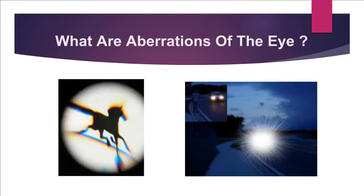What are aberrations of the eye? They are described as small optical irregularities — aberrations are imperfections of the eye. This results in light being unable to focus onto the retina effectively, causing defects in visual image.